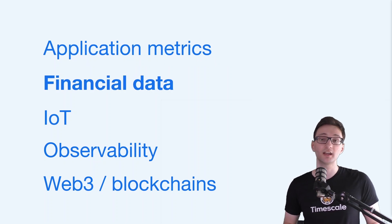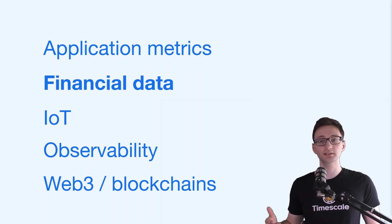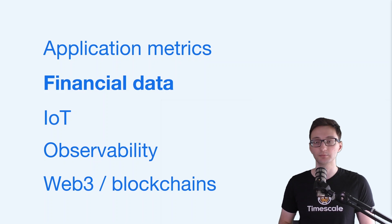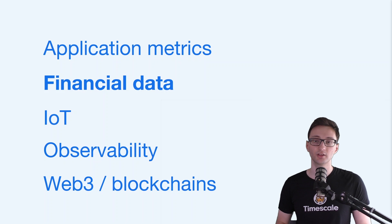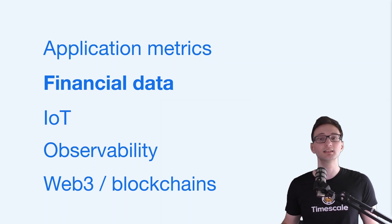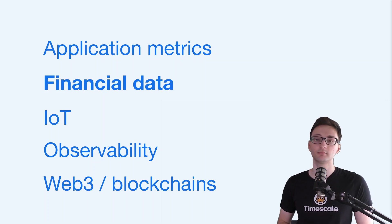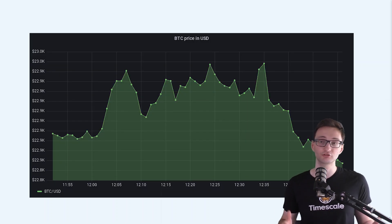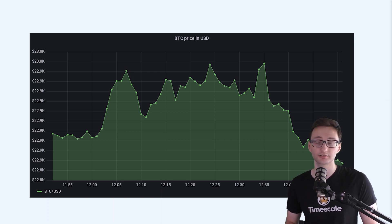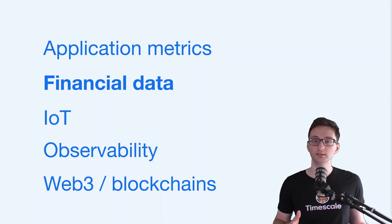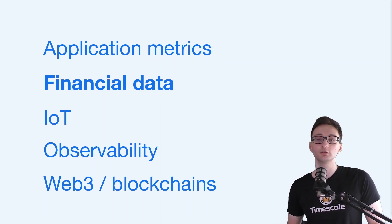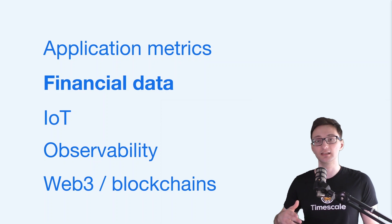The next category is financial data. The financial sector is a typical example of time series data usage. Be it stocks, cryptocurrencies, or other financial assets, time series data allows you to see how prices changed over time and helps you spot trends. Here's a time series chart showing you the intraday price changes of the Bitcoin cryptocurrency. Time series data allows you not just to know the current price of the asset, but it also shows you how it changed in the past.